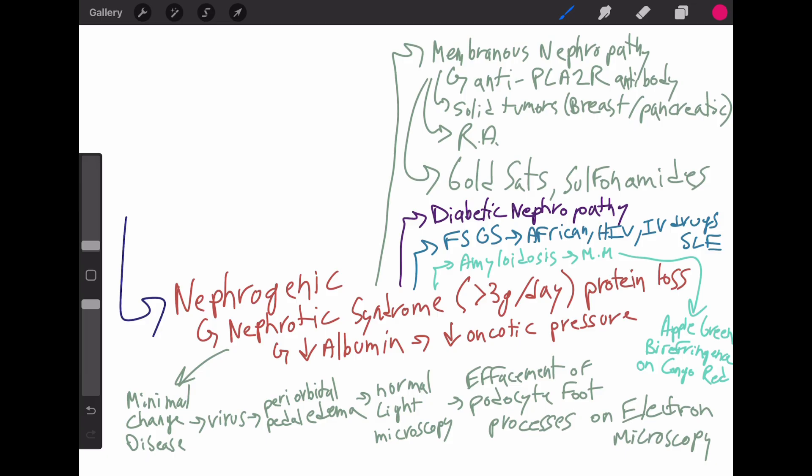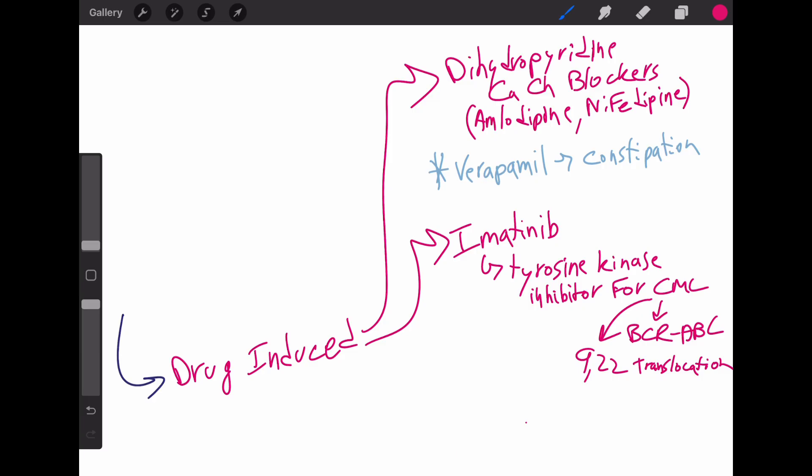All right, let's get into drug-induced edema. Dihydropyridine calcium channel blockers, such as amlodipine and nifedipine, are classic culprits. This is high yield for step two in family medicine. Patients may present with puffy legs and forearms. If they give you a patient with random edema without giving you any indications or causes, make sure to check what medications they have started recently. Verapamil, a non-dihydropyridine calcium channel blocker, is more associated with constipation, not edema. And imatinib, a tyrosine kinase inhibitor for CML, can also cause peripheral edema. This is less common, but it is testable. They might catch you with it, so know that.